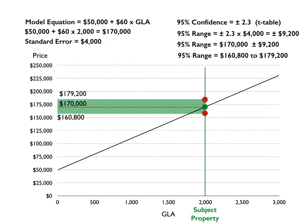That gives us our confidence in the estimate. So instead of just delivering a point estimate of one hundred and seventy thousand, we could also state that we are ninety percent or ninety-five percent confident that the value lies between one hundred and sixty thousand eight hundred and one hundred and seventy-nine thousand two hundred, based on the data set from our market. That's how we answer the question on confidence.